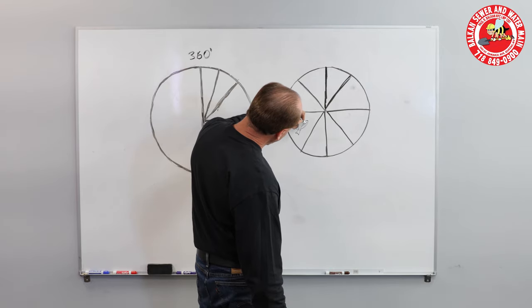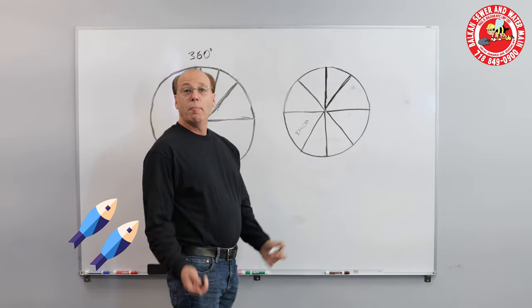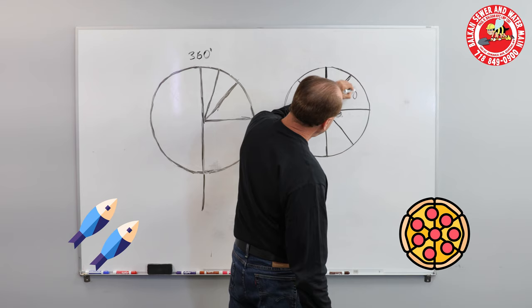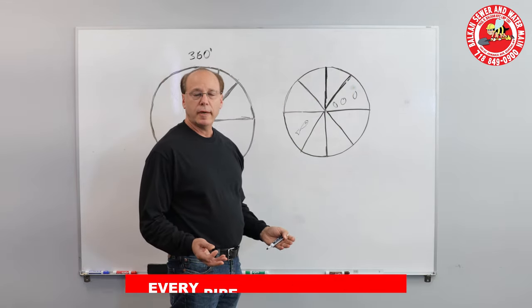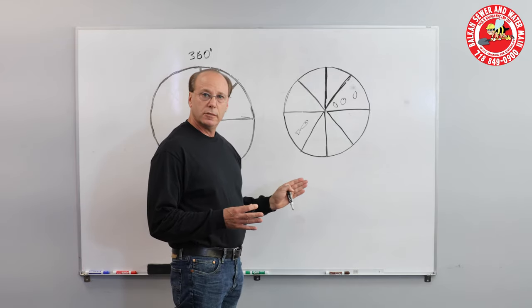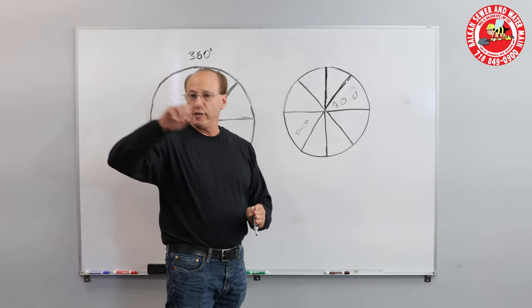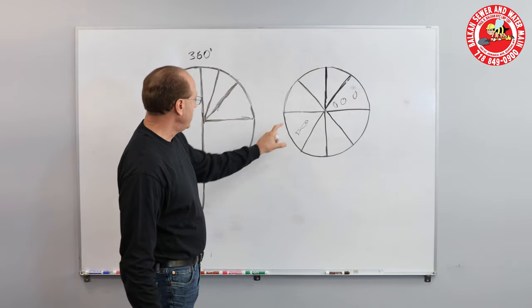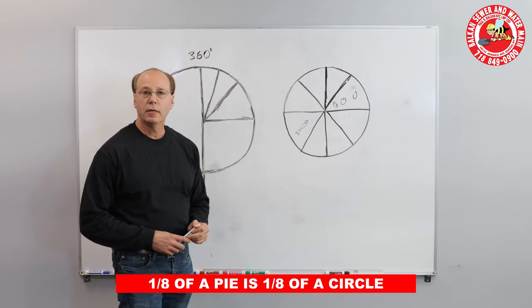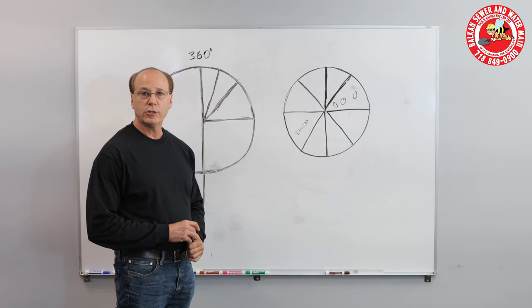Mine's anchovies. Some people find that gross, but maybe yours is pepperoni. So we'll give you the meat. Every pie has eight slices. Eight slices, 360 degrees is a whole circle, right? So one-eighth of a pie is one-eighth of a circle, which is 45 degrees.